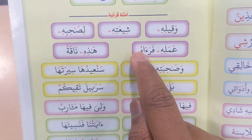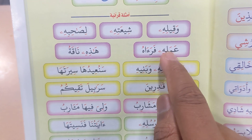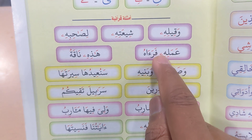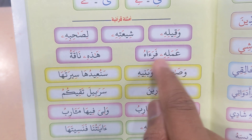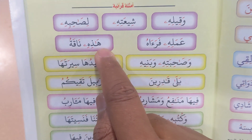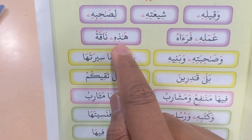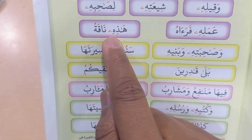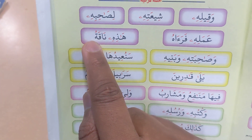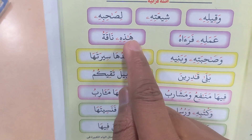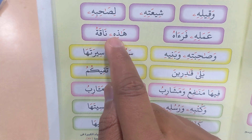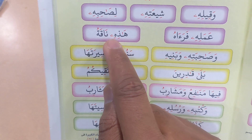Fara'ahu — you see here the Maddiya Sagheera comes after the Ha. Hadihi — you see here it comes after the Ha, the round Ha that cannot be connected.